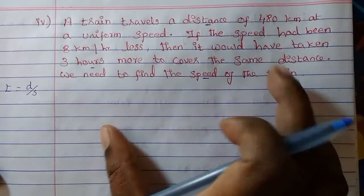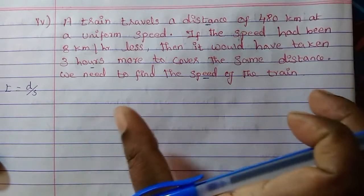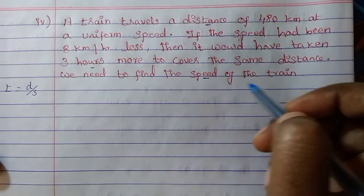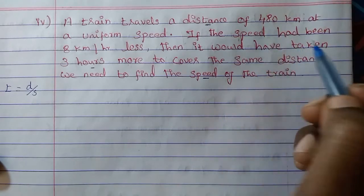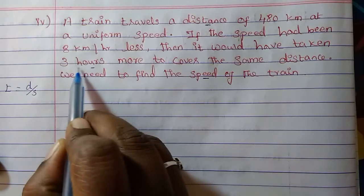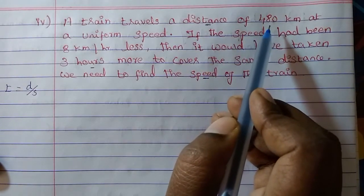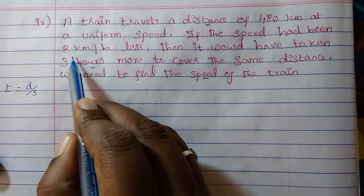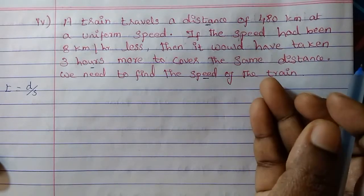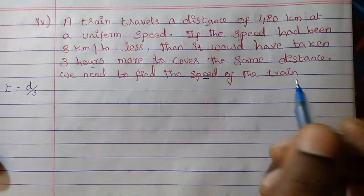Let us find the normal speed of the train. The train is running at a uniform speed — the same speed every day — covering 480 km. Now if the speed is reduced by 8 km per hour, the time taken is 3 hours more. For example, if the train normally runs for 10 hours to cover 480 km, and the speed decreases, the time will increase — say to 13 hours. We need to find the speed of the train.